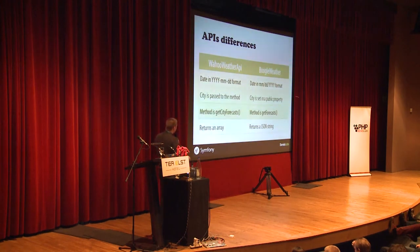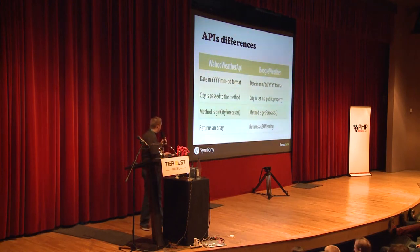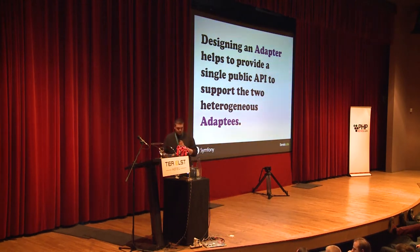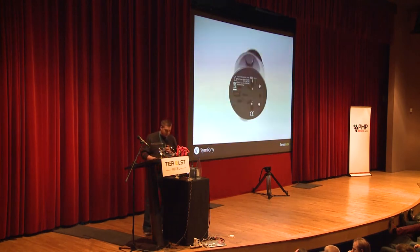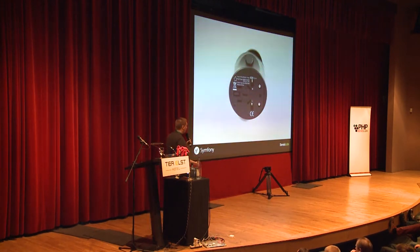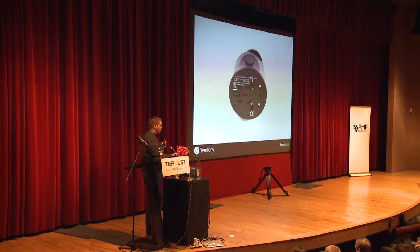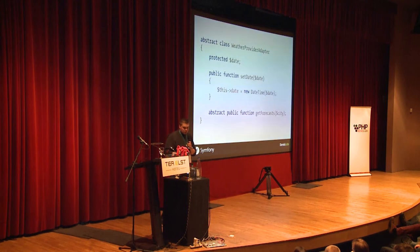I want my main client object to use both service providers. We have to implement the Adapter pattern to adapt the heterogeneous adaptees — the two service providers. Think of a power plug: an adapter is just like a power plug when traveling to another country where plugs are different, like the US and Belgium. The adapter adapts the adaptees.